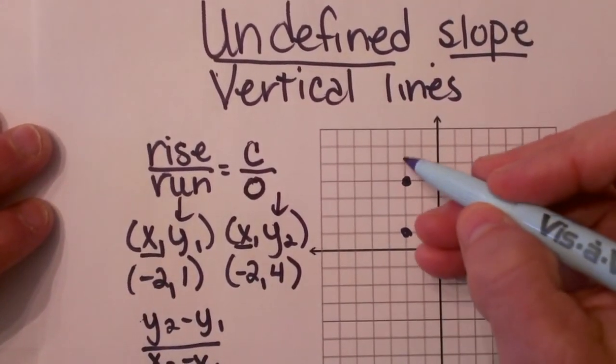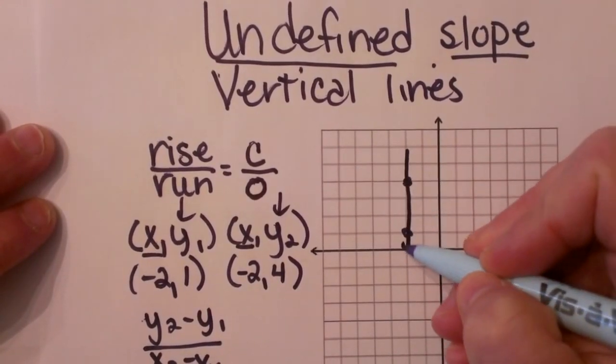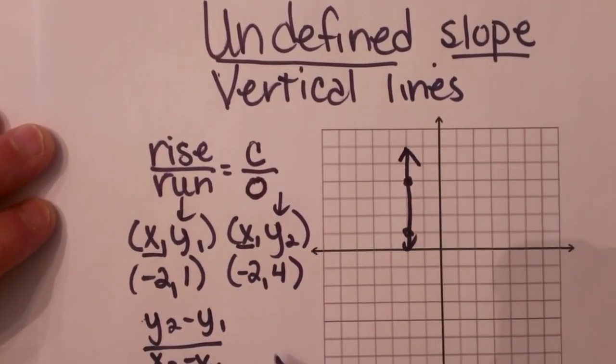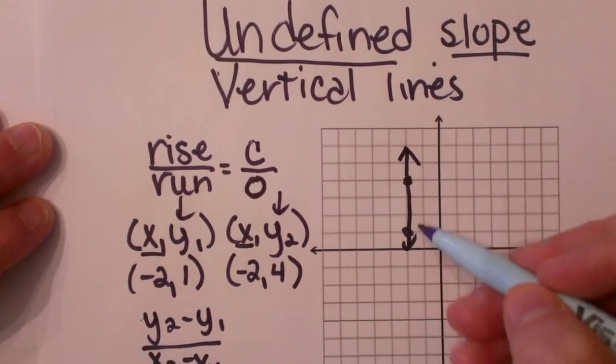And I have plotted these, so let's draw the line that connects these, and notice that is a vertical line. So you can see that the x coordinates are the same.